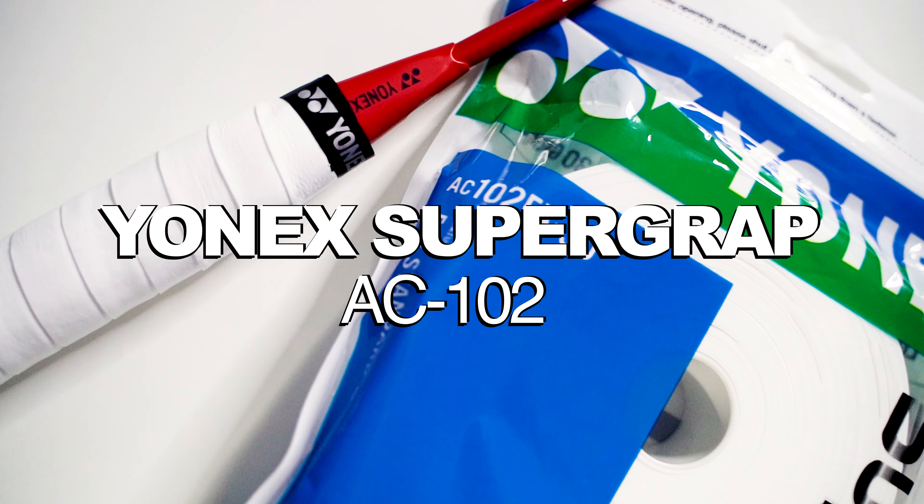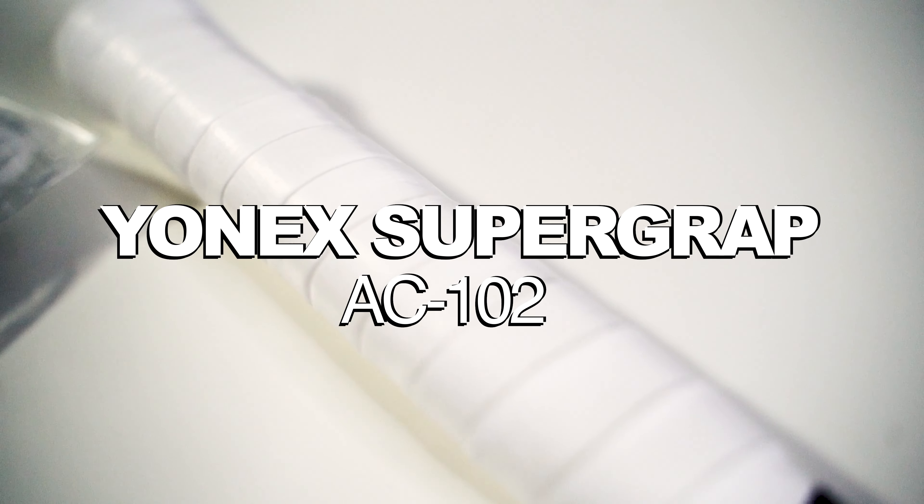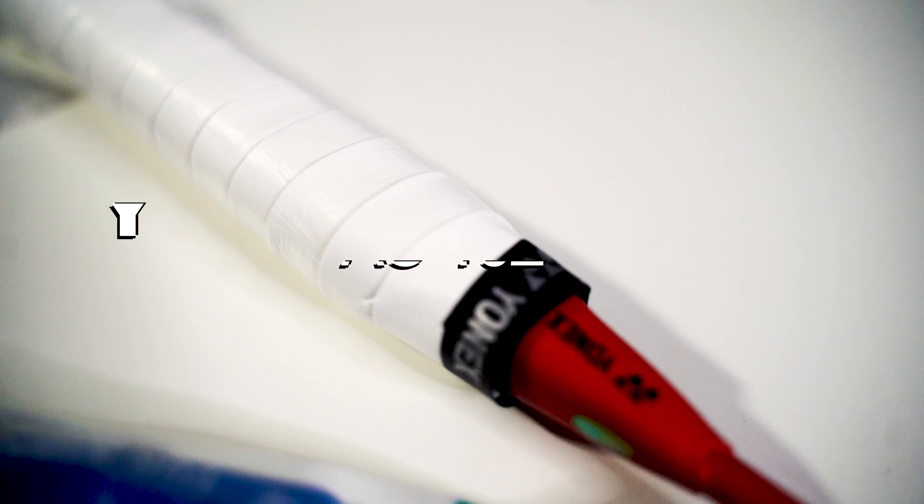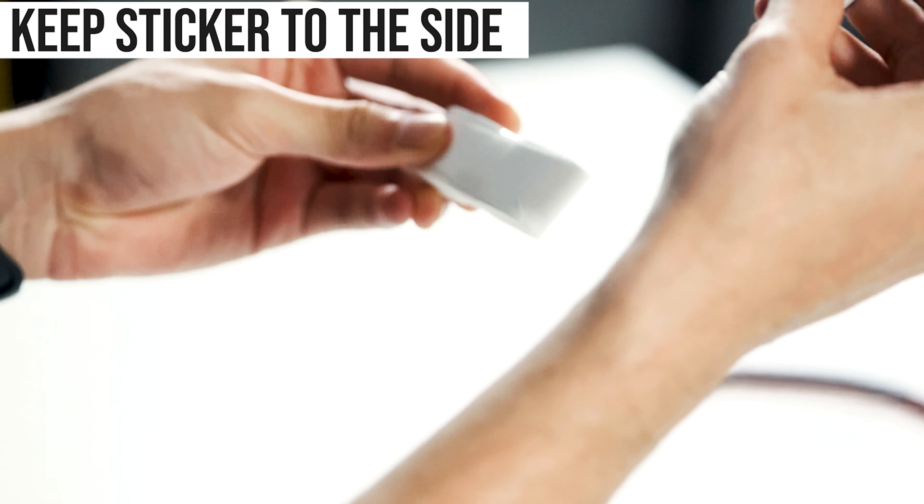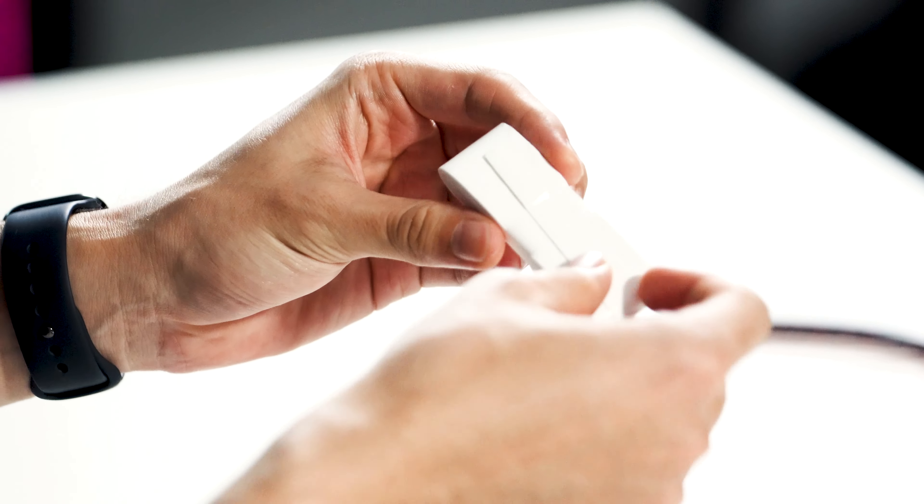Right here I have some of Yonex's AC102 standard white super grab. We have this little sticker which we can set aside for now because we won't be using it until later.